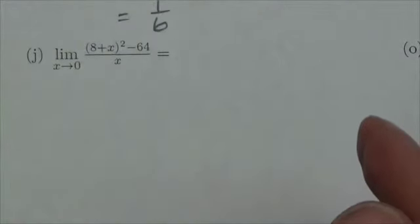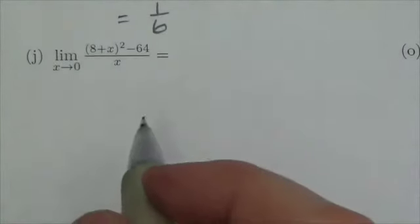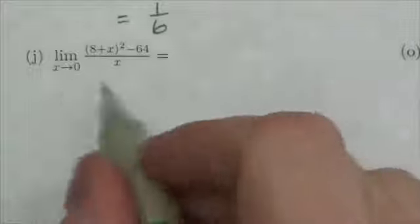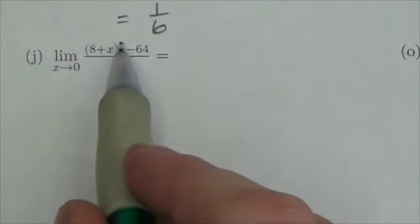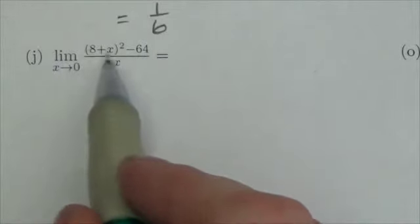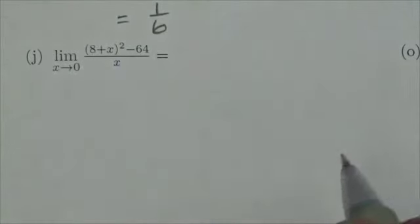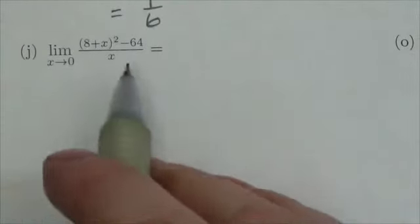Okay, hi everybody, this is the Math 31 Limits Review. I'm working through question 1j. I'm just going to take the limit of this. Now if I plug 0 into this, 8 plus 0 is 8 squared, 64 minus 64 is 0, all over 0. So this is 0 over 0, which means I have the indeterminate form, so I've got to do some work here.